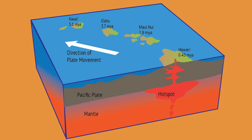EO fossils have been found on Kauai, Oahu, and Molokai. This is important because it indicates that EO distribution in the past was much broader than it is today. Currently, EO only reside on Hawaii Island. But to put their evolution and distribution into context, we know that Hawaii Island didn't even emerge from the Pacific Ocean until 430,000 years ago, and every island looking westward from Hawaii Island is older than that, Kauai being the oldest.